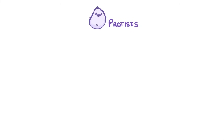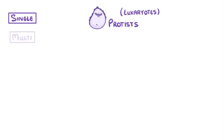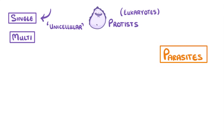Just like fungi, protists are also eukaryotes and can be either single or multi-celled organisms. However, the large majority of them are unicellular. Some of them are classed as parasites, which means they live on or inside other organisms and they survive at that other organism's expense.